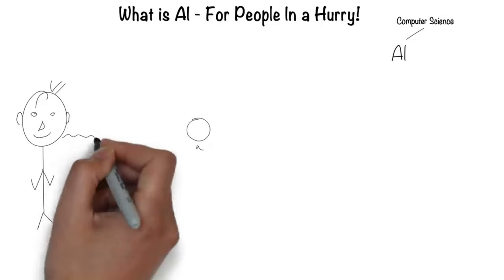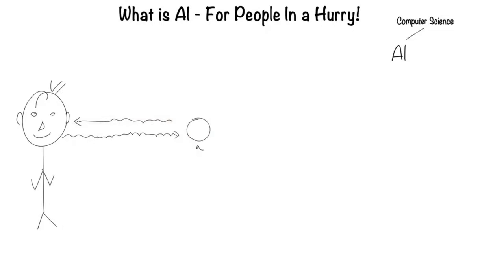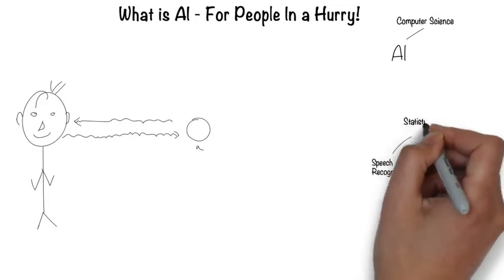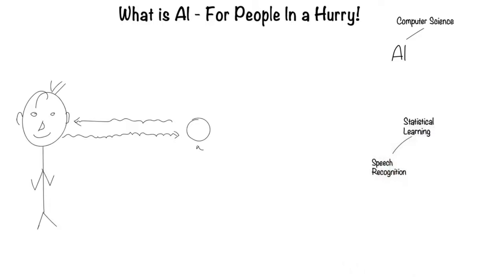Humans can speak and listen to communicate through language. This is the field of speech recognition. Much of speech recognition is statistically based, hence it's called statistical learning.